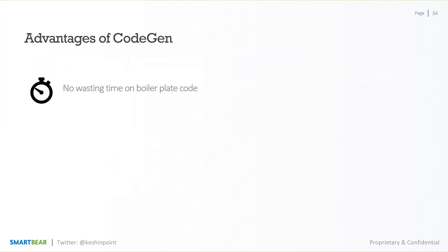The advantages of Swagger CodeGen, or just code generation from the definition, is no wasting time on boilerplate code. Once you have the definition in place, you can auto generate the server stubs or the client SDKs. Let's just get straight to the point — focus on the value of the API and not spend time on manually configuring that API's routing.